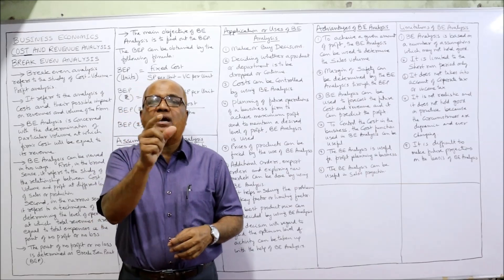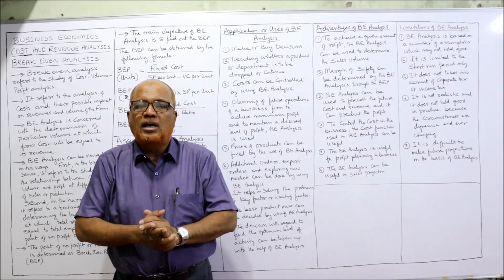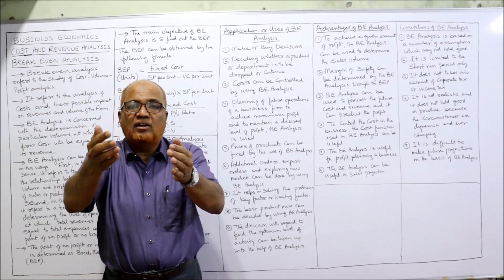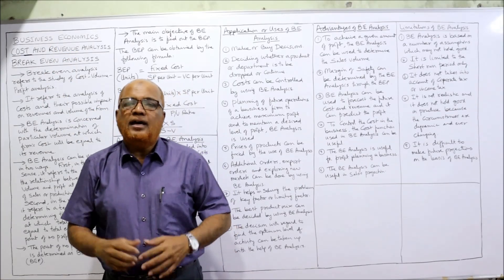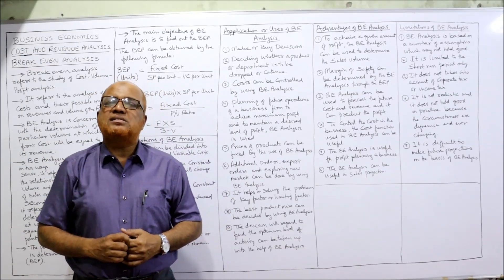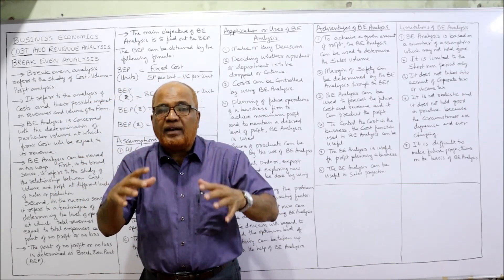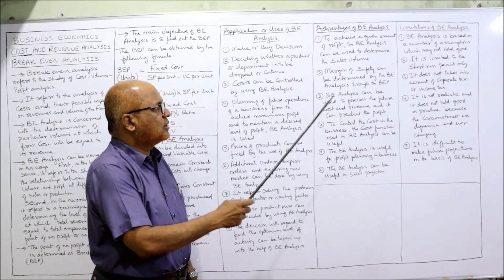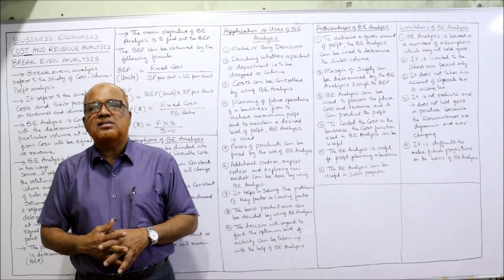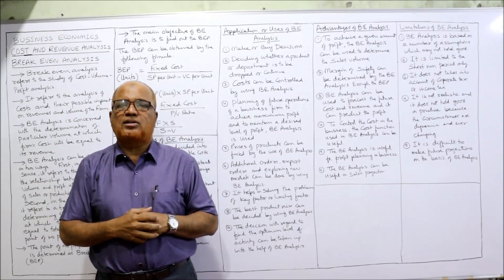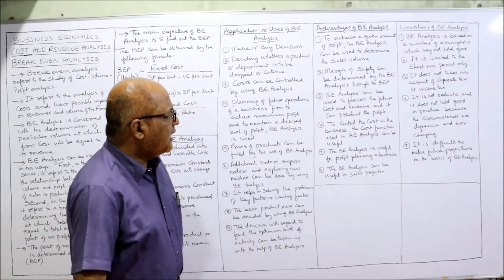Another advantage: margin of safety can be determined through break-even analysis. Margin of safety is the excess of actual sales over break-even sales. For example, if break-even sales are 10 lakh rupees and actual sales are 15 lakh rupees, the margin of safety is 5 lakh rupees. Break-even analysis can also be used to forecast future cost and revenue and predict profit — projecting what future costs and revenues will be.